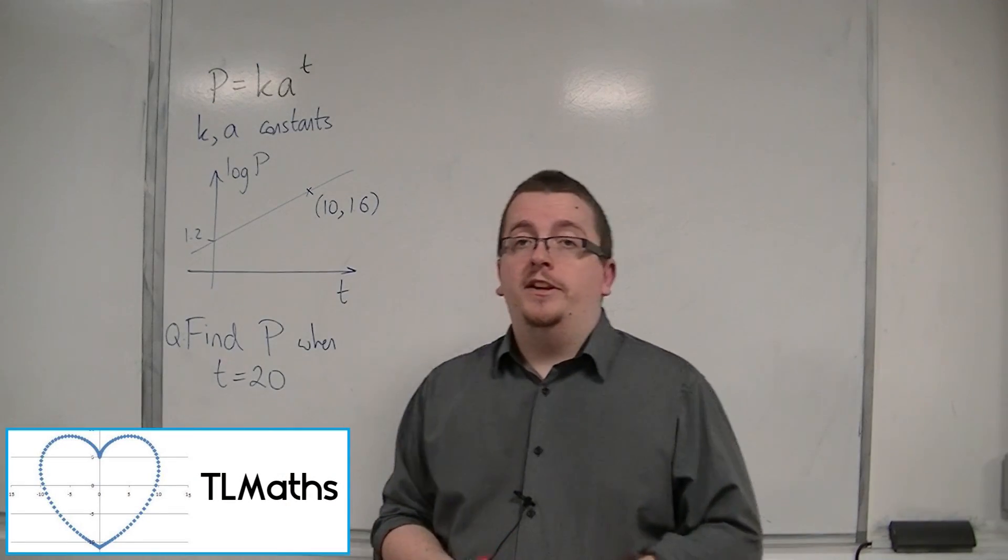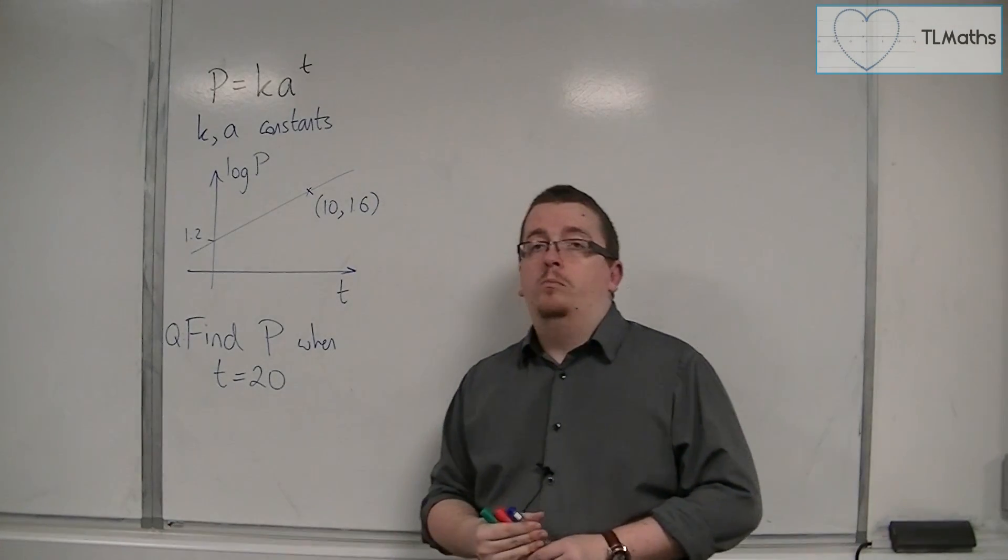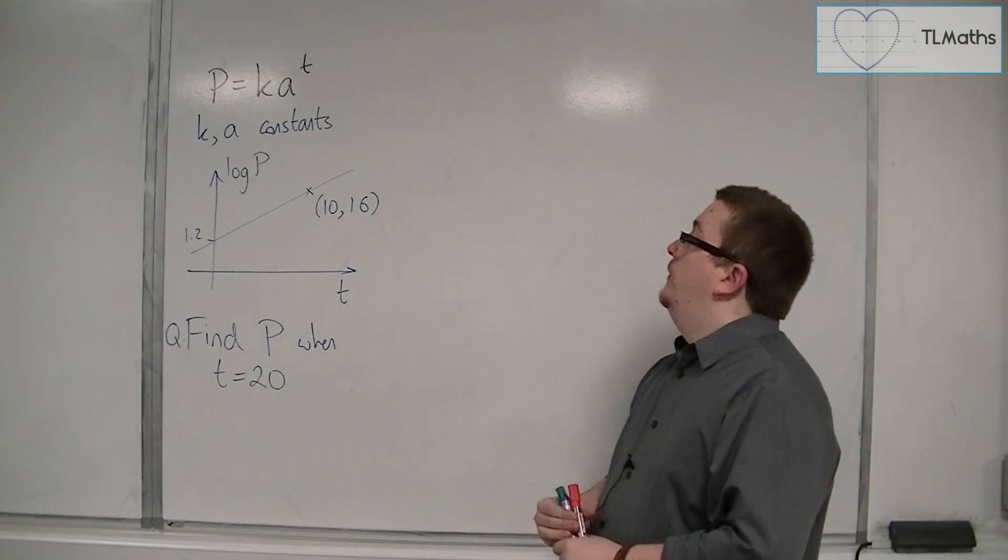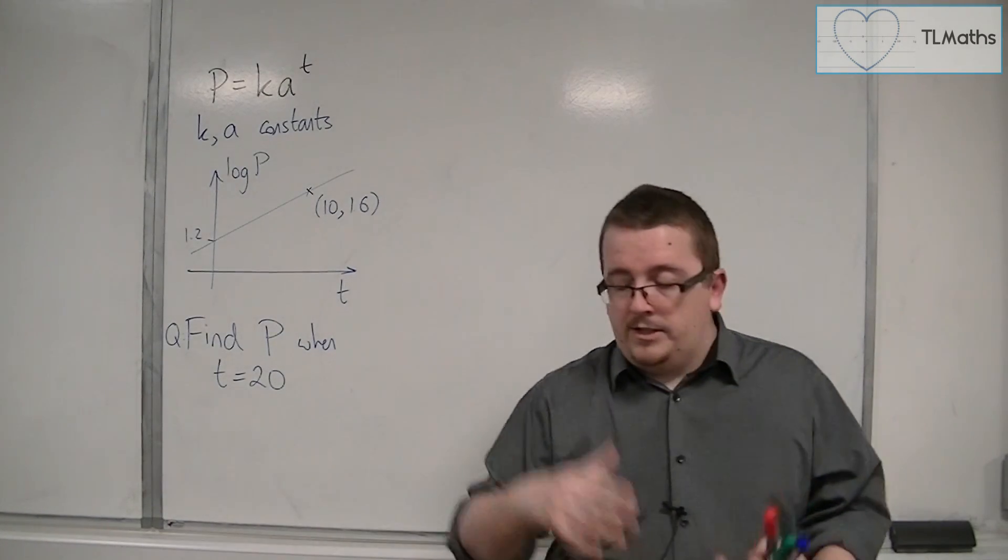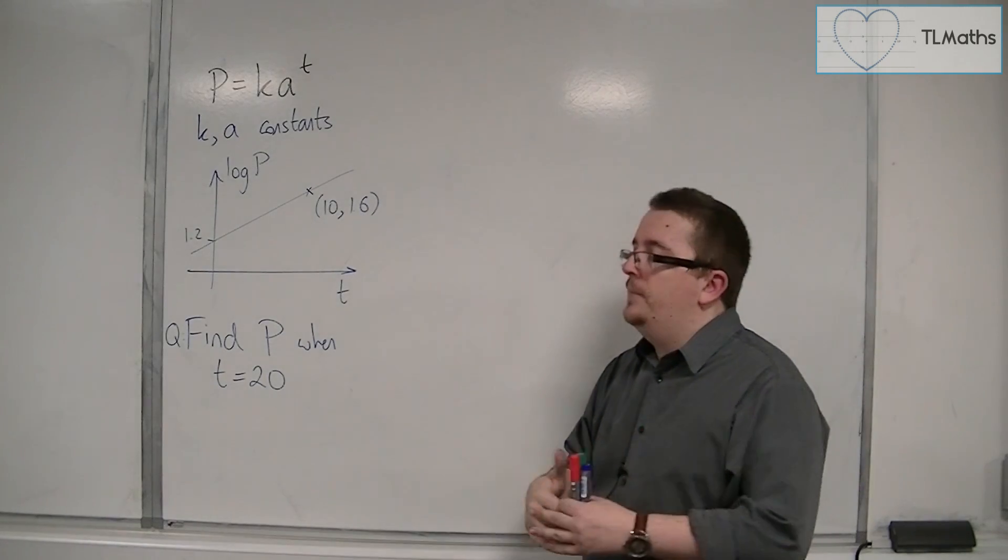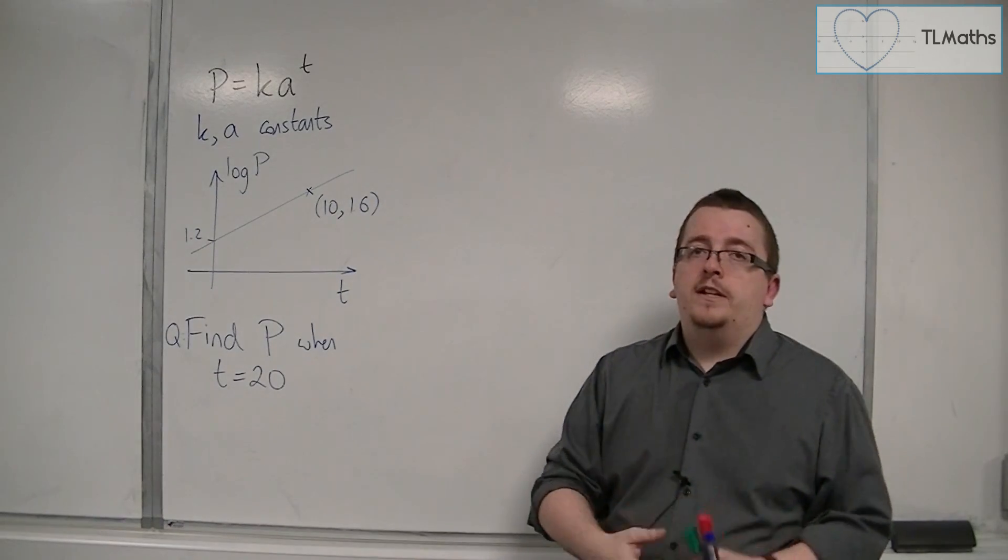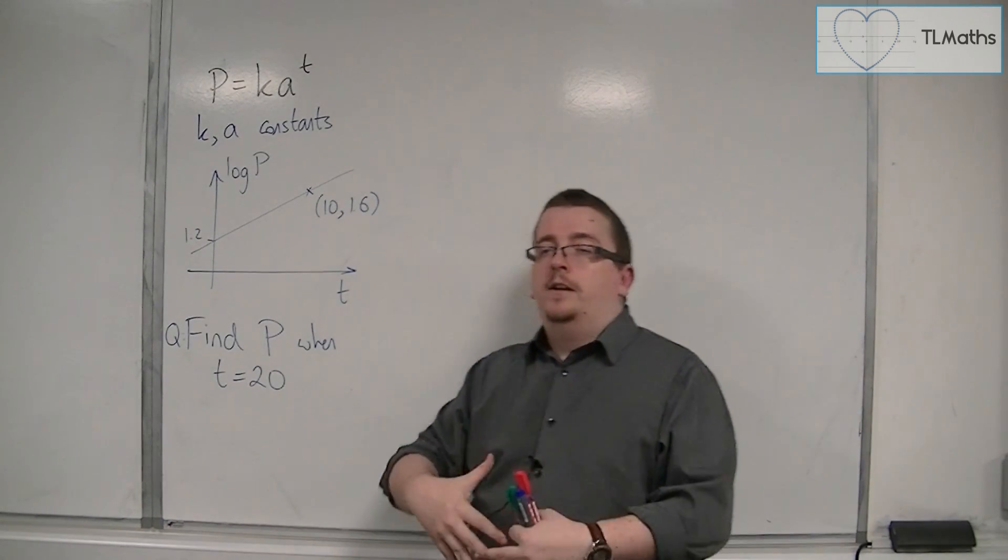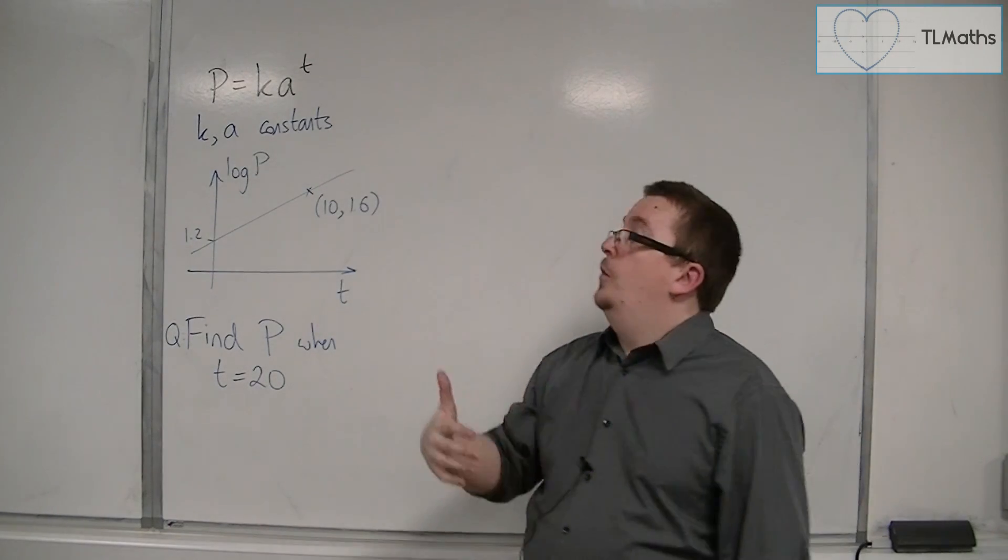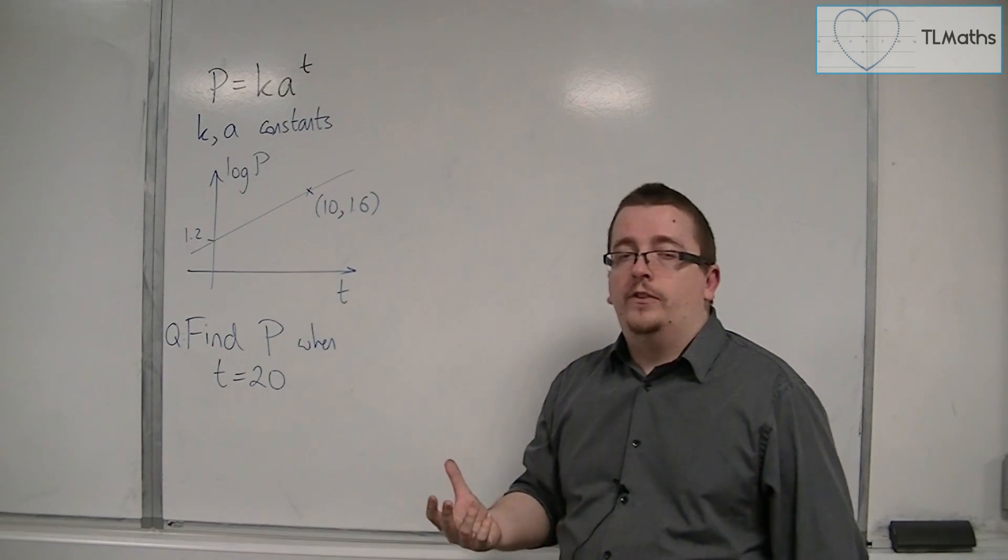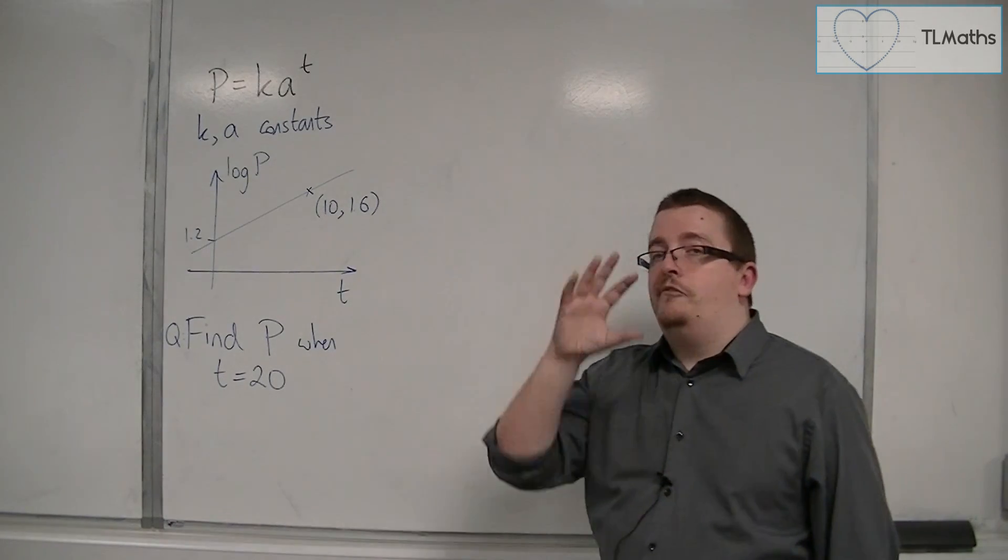So we've been looking at reduction to linear form, and in this video I'm going to go through the whole process. So what happens is that a scientist has recorded some data, they've plotted the data on a graph, and it looks like the data fits the curve P is equal to Ka to the T, where in this case K and A are constants. So that means that if K and A are constant, then P and T are variables.